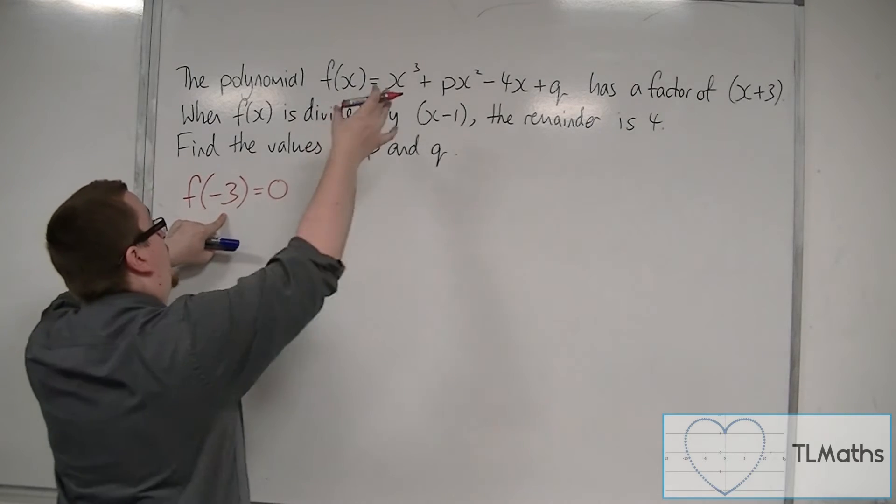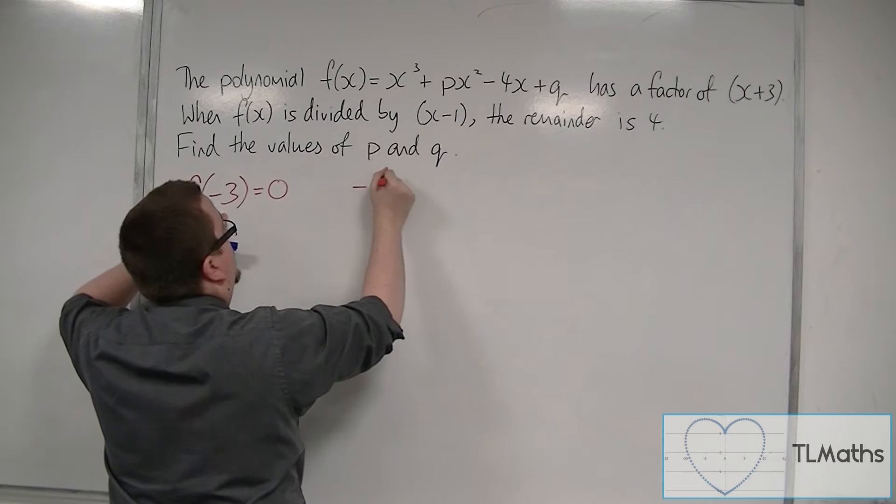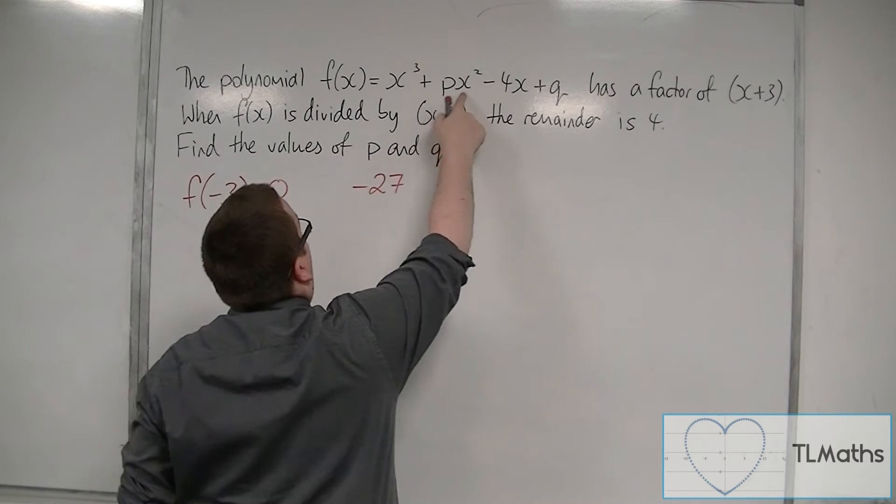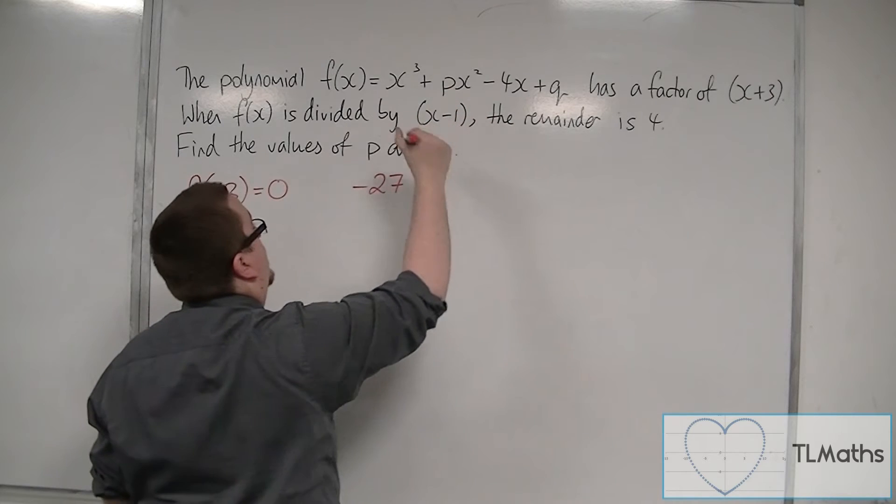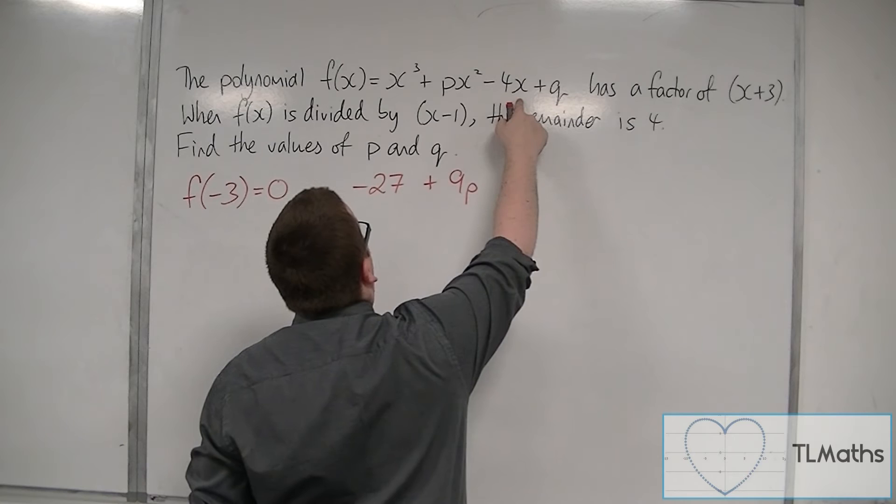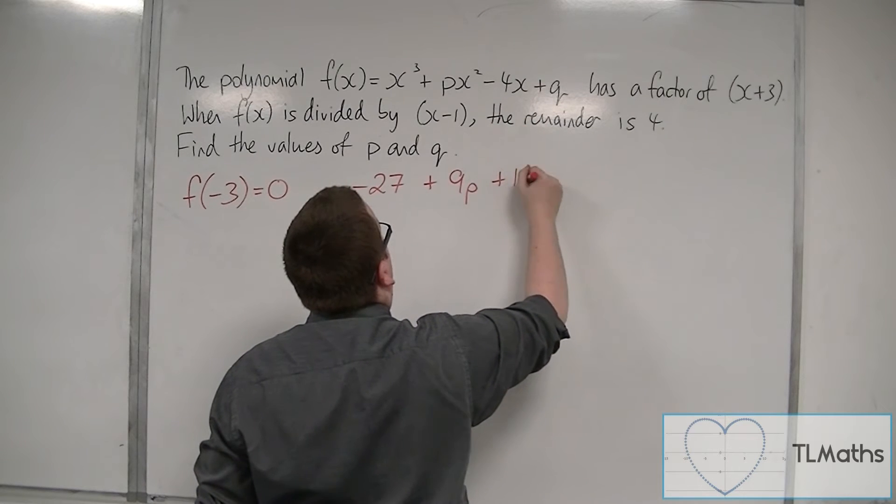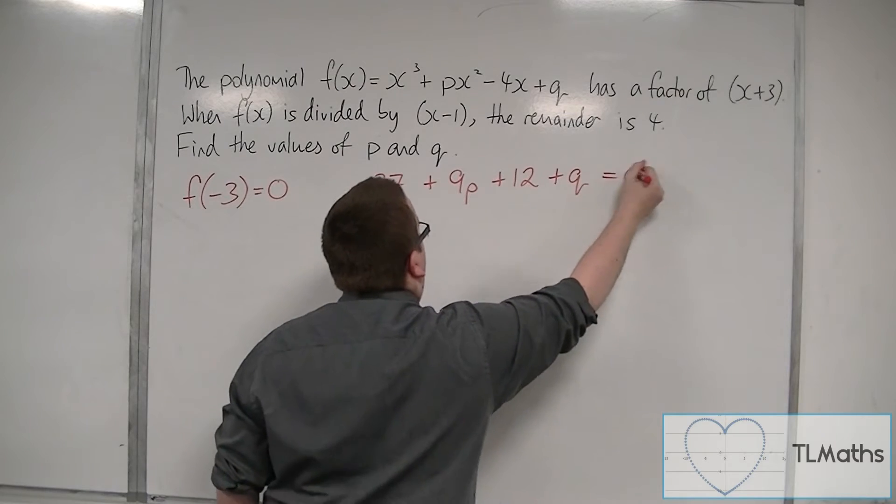So minus 3 substituted in, we're going to get minus 3 cubed, so minus 27, plus p times minus 3 squared, so that's 9p. Minus 4 times minus 3 is plus 12, and then you've got plus q, and that's going to have to be equal to 0.